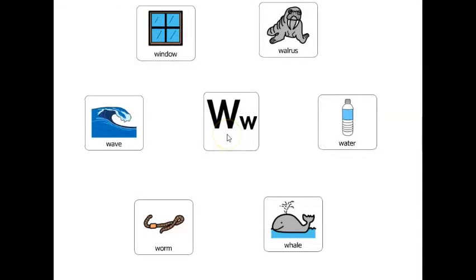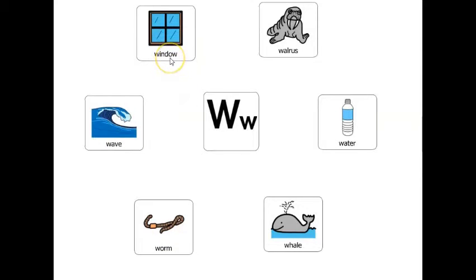Letter W makes a sound W. Here are six words that start with the letter W. You can say them after me. Walrus, water, whale, worm, wave, window.